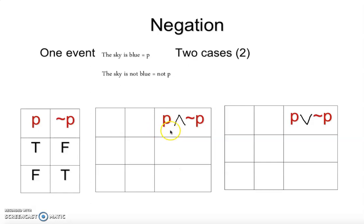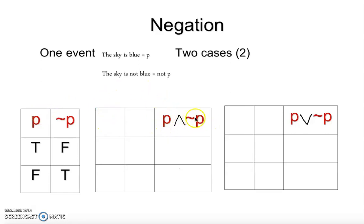If something is given to you and says 'construct the truth table with negation, conjunction, and disjunction,' first you have to understand how many different events are happening. Remember, one statement has two cases. I need P and I need not-P. So: P is true, not-P is false; P is false, not-P is true.